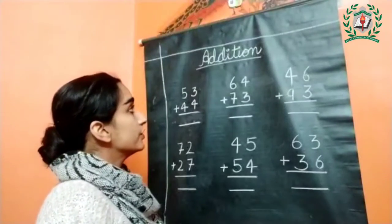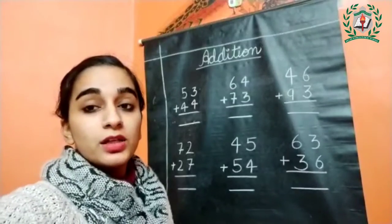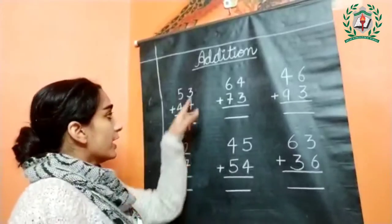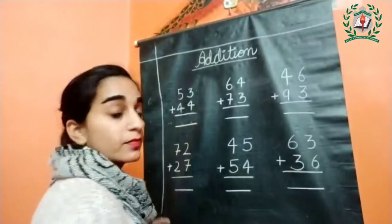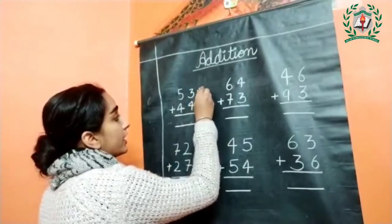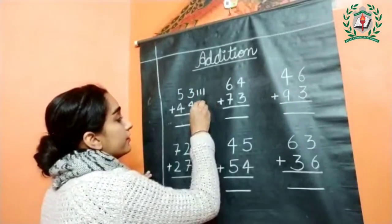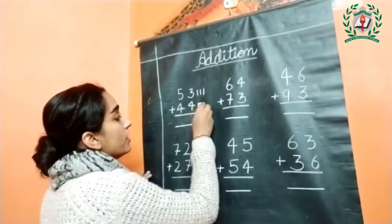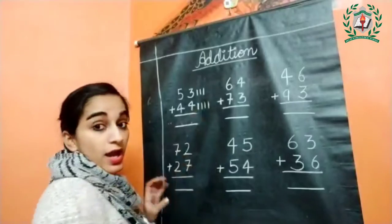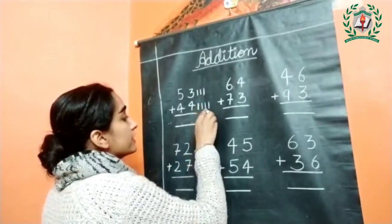Hello my kids, today we are going to learn double digit addition. First we calculate this side — this is three, draw three lines: one, two, and three. And this is a four, draw four lines: one, two, three, and four. Now add them together: one, two, three, four, five, six, and seven.